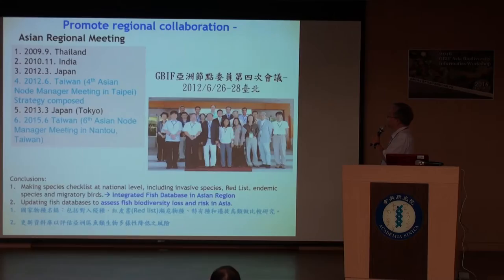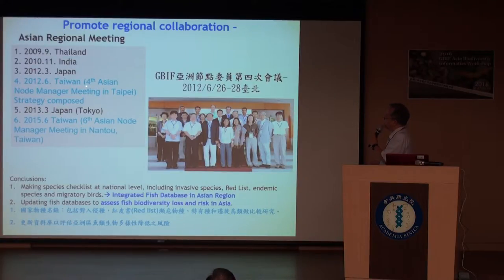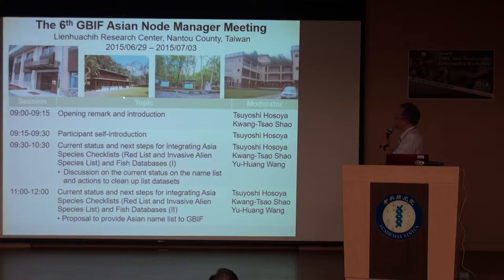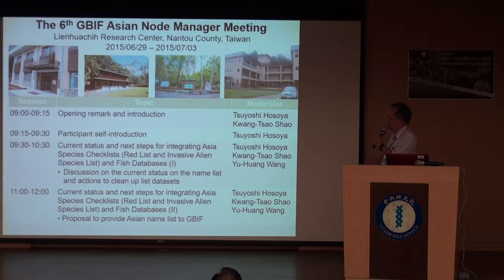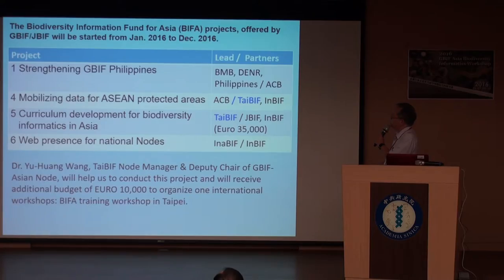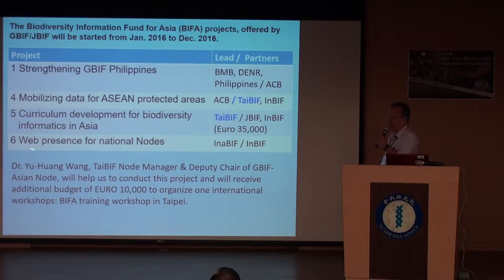For background, as you know, we have held the Asian regional meeting for GBIF many times. The fourth and sixth meetings were held in Taipei. In one of those meetings in central Taiwan, we talked about how to apply for the DIVA fund and which projects should be funded. After a couple months of effort, out of eight projects that applied, four were granted.